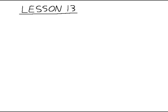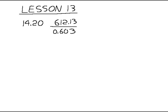I'm going to do problem 20 in lesson 14. You don't have to flip over to that if you don't want to — just watch on the board and write that down and work it with me. The problem is 612.13 divided by 0.603. They say to round the answer to two decimal places, so we need at least three decimal places in our answer to know whether to round up or leave it the same. We'll write 0.603 outside and put 612.13 on the inside of the division symbol.